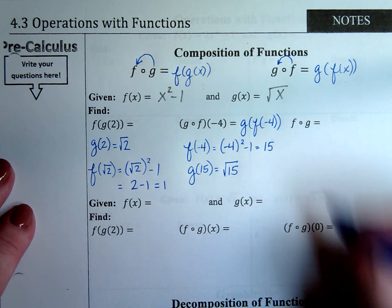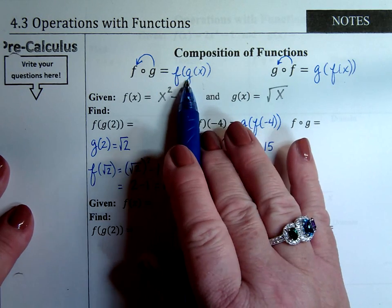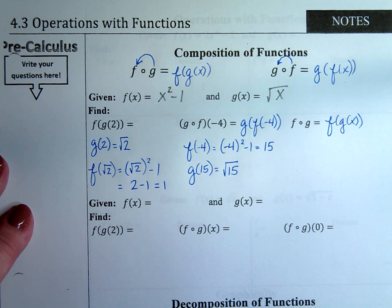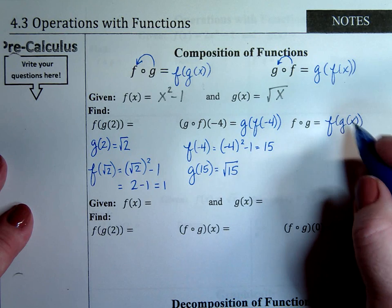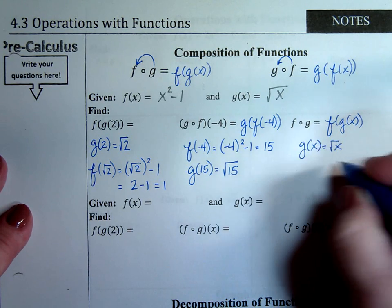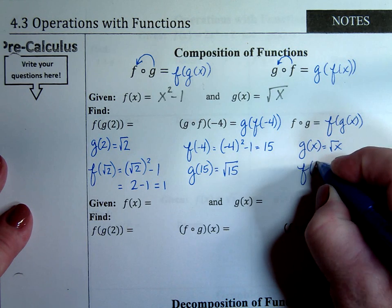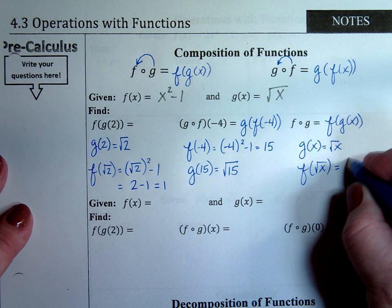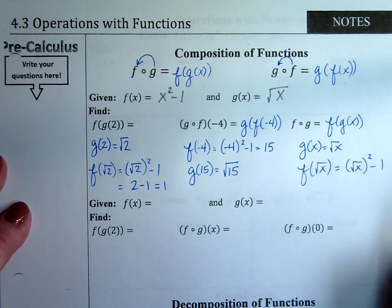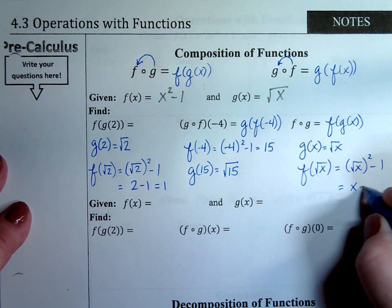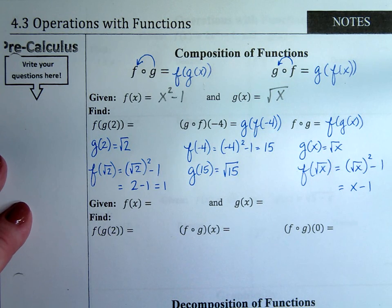The last one is fog, which is equivalent to F of G of x. Notice they didn't give you a number this time — just an x. G of x is the square root of x, so you want to know what F of the square root of x is. Take the square root of x and plug it into the F function. When you square a square root it gets rid of the root, so you get x minus 1, and that's your final answer.